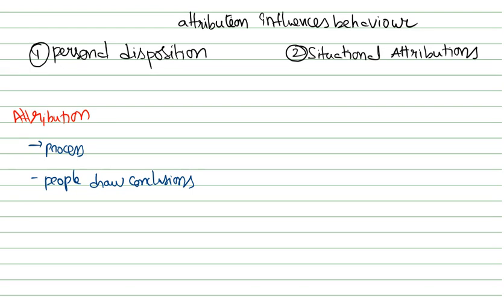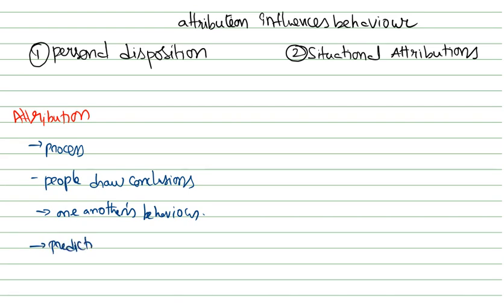People draw conclusions about the factors that influence or make sense of others' behavior — they come to a conclusion, that is what we call attribution. They also try to predict certain actions and events, which makes them respond according to the situation or condition around them. That is what we consider as attribution: a process by which people draw conclusions.